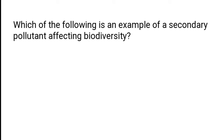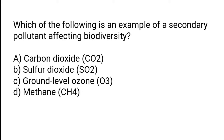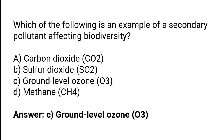Which of the following is an example of a secondary pollutant affecting biodiversity? A) Carbon dioxide (CO2), B) Sulfur dioxide (SO2), C) Ground-level ozone (O3), D) Methane (CH4). The correct answer is option C — ground-level ozone (O3) is an example of a secondary pollutant affecting biodiversity.